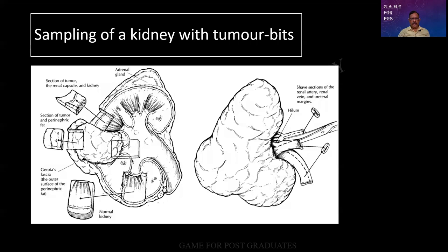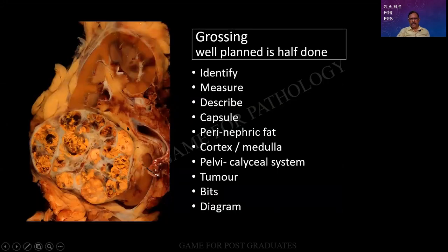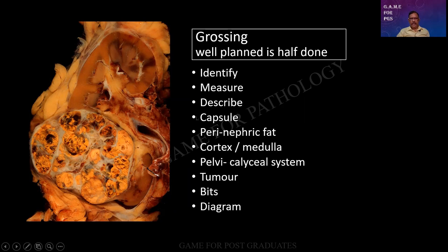If it is going to be solid, homogeneous, and uniform, then multiple bits are not mandated. The yellowish color and areas of hemorrhage make it appear well circumscribed, but sometimes there can be small nodules outside called satellite nodules — seemingly circumscribed, but not benign. Before giving the bits, have some kind of a plan: identify, measure, describe. The normal kidney, the perinephric fat, the capsule, size of the tumor, shape — from where you are going to give the bits, a diagram is always mandatory. For postgraduate students, please develop this habit of drawing a diagram so that your colleague or faculty will have no doubt about what you have done.